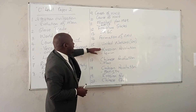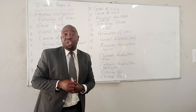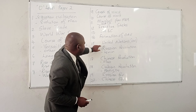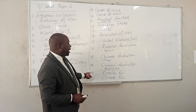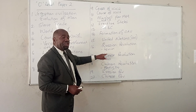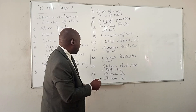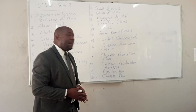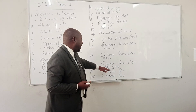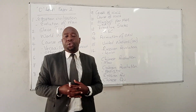At number sixteen, they can ask you about the Russian Revolution — what took place during that time. In this paper, there will be two questions on the Russian Revolution: number sixteen and number nineteen. At number seventeen, there will be a question on the Chinese Revolution, and on number twenty, another question on the Chinese Revolution. On number eighteen, they will ask you about the Cuban Revolution — the course of the Cuban Revolution and the role played by figures such as Batista.